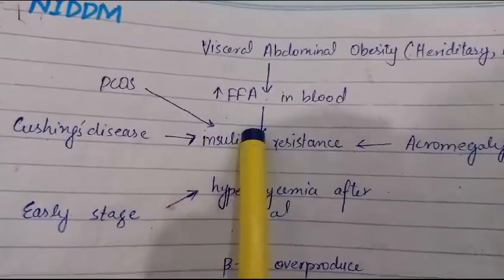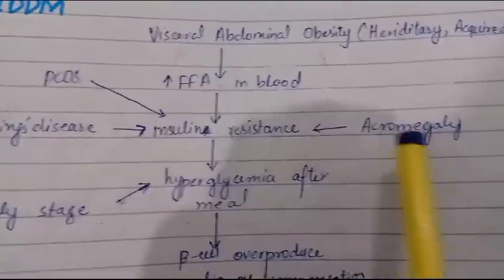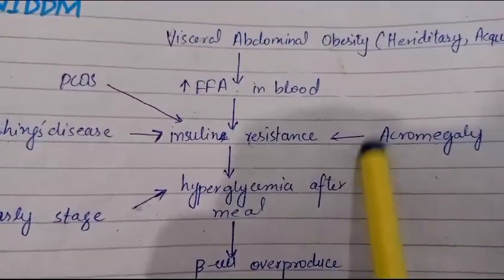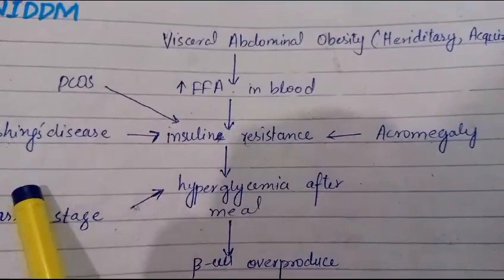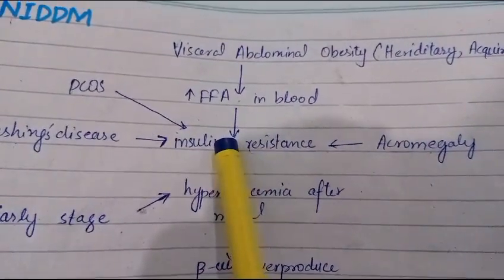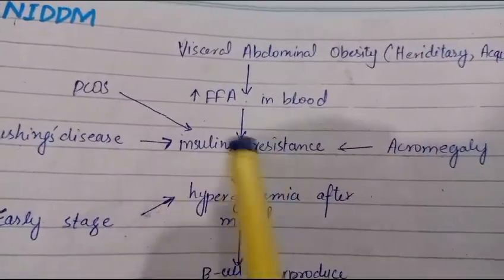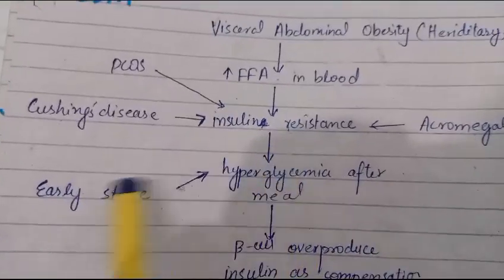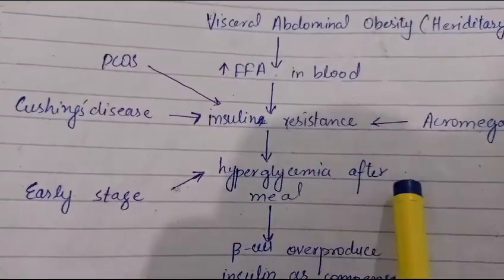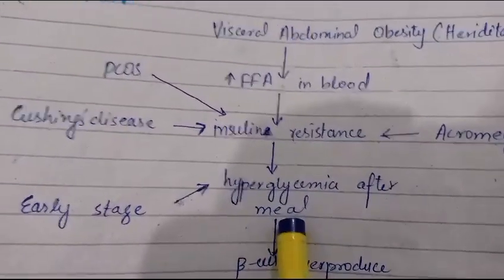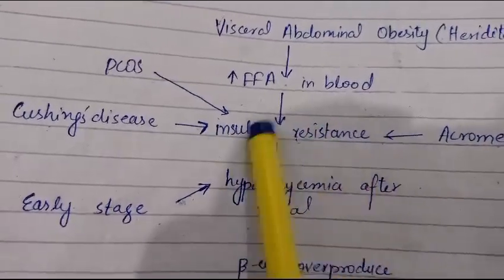Growth hormone also acts similarly to cortisol and gives insulin resistance to the body. In the early stage of insulin resistance, what happens initially is postprandial hyperglycemia — the body has not responded to insulin, so blood glucose levels increase after eating.